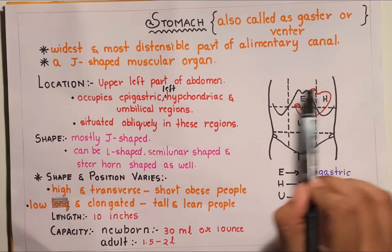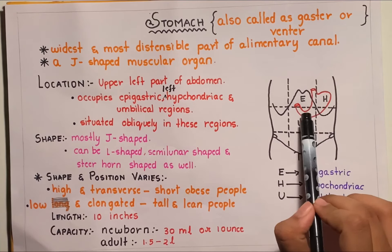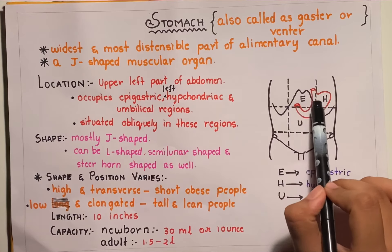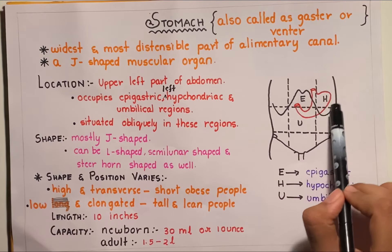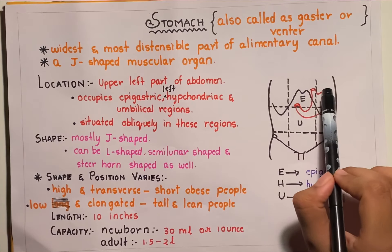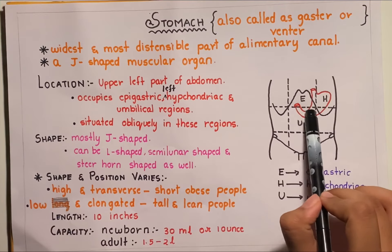Amongst these nine regions, the stomach occupies the epigastric region, the left hypochondriac region, as well as the umbilical regions.